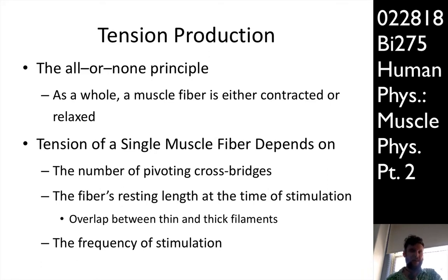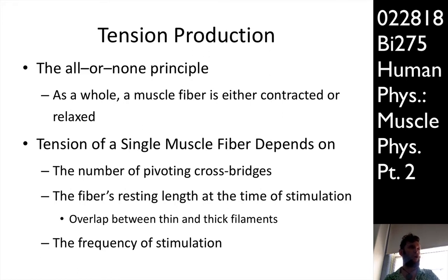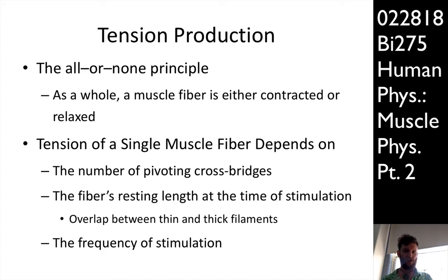In a single muscle fiber, the tension produced depends on a couple of factors. First, the number of pivoting crossbridges — like in Formula One racing, the more rubber on the road, the more force the engine can bring to bear. Second, the fiber's resting length at the time of stimulation — looking for the optimal length in the zone of overlap between thin and thick filaments. And third, the frequency of stimulation.